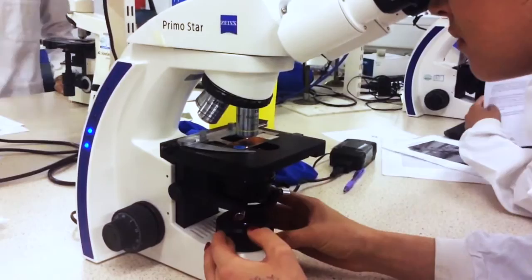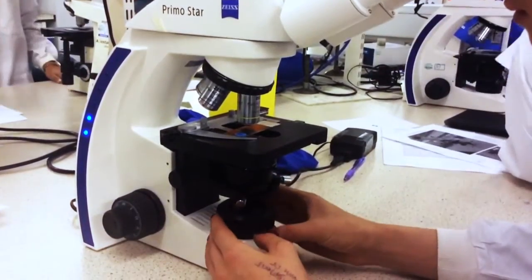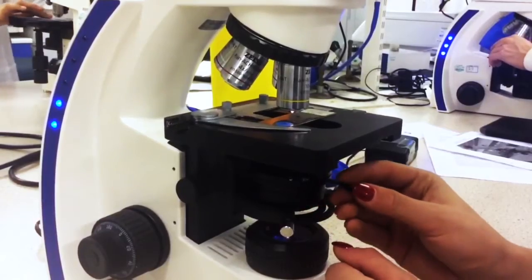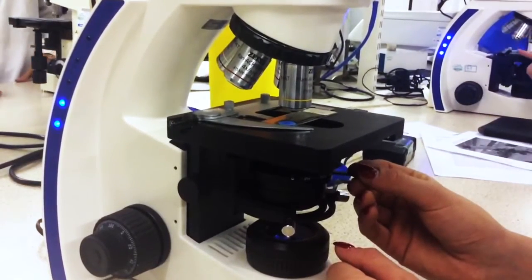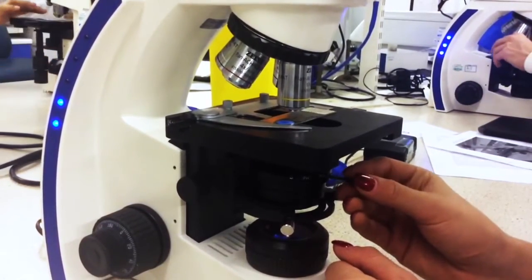Ensure the black circle is just absent from the field of view. Open the field diaphragm. Close the condenser diaphragm using the slider. Gradually open until the point is reached where the preparation is adequately illuminated.